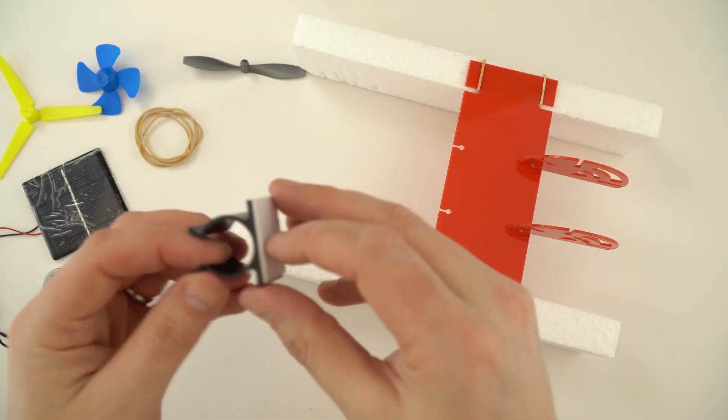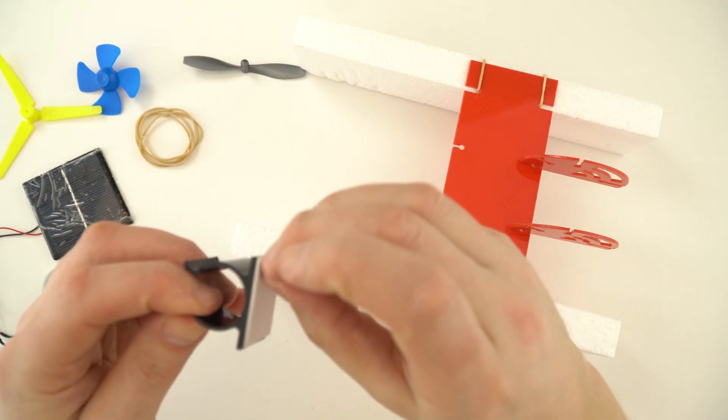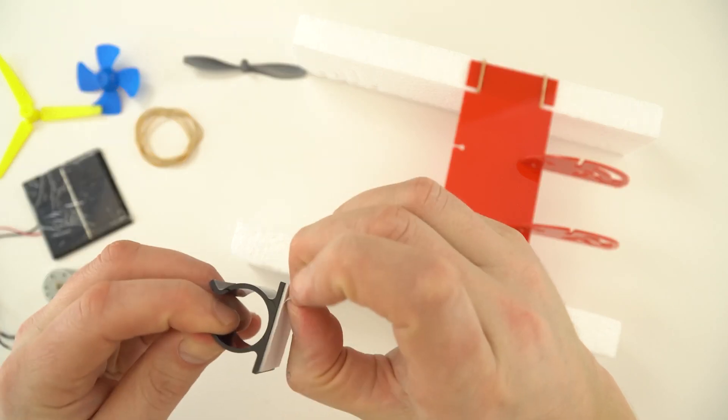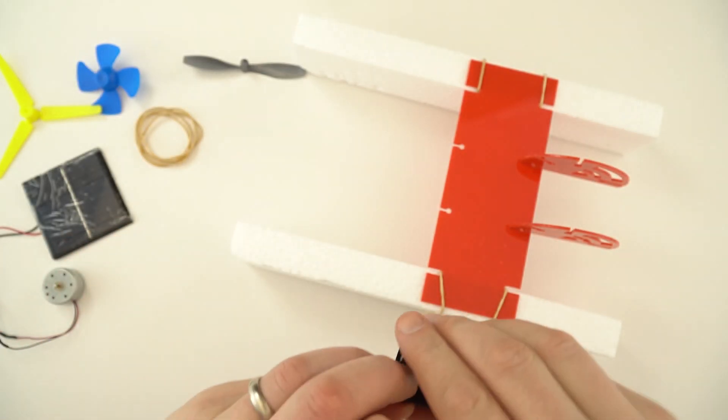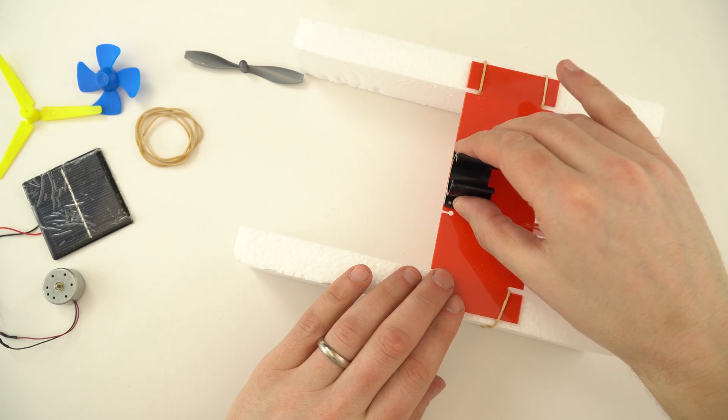Now this piece here is just for attaching the motor, and it's got a sticky base. So if I just peel that off, what I'm then going to do is put this in the middle and at the very front of the deck.